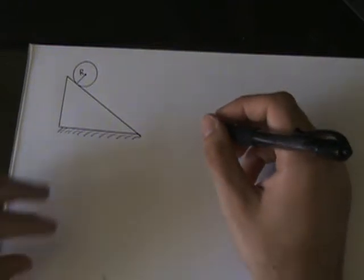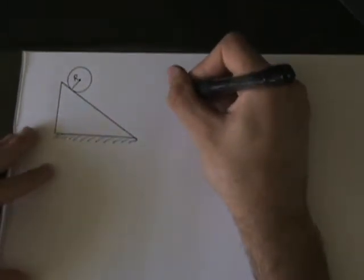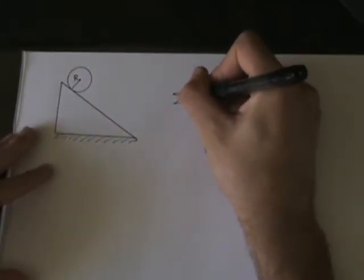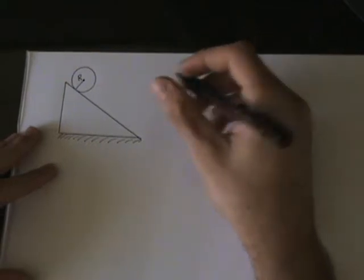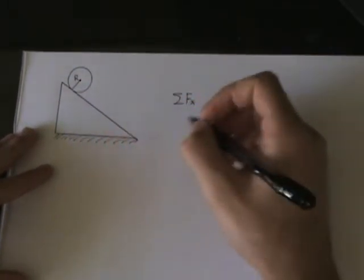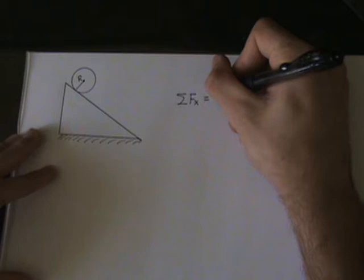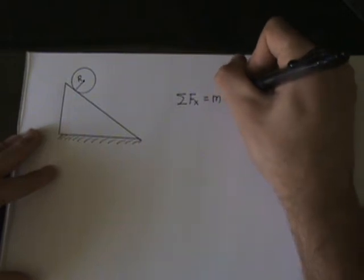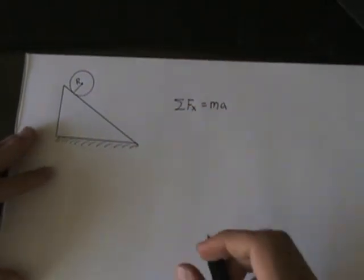We know from Newton's second law that force, vector sum of all forces in this case the x direction, taking the surface of the incline to be the x, is equal to the mass of the object times its acceleration.